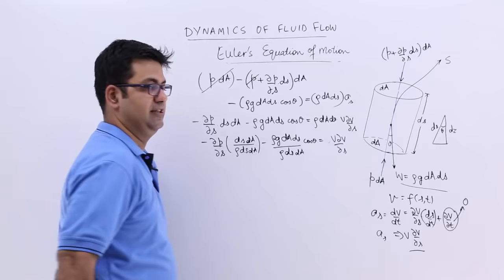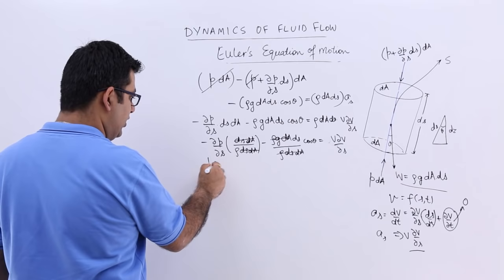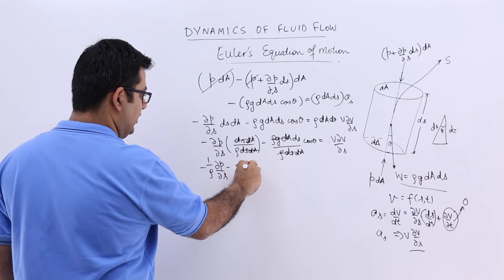This and this can get cancelled off. This entire thing will go off. So you will have minus, or let us say, 1 by rho negative curly p by curly s minus g cos theta is equal to V curly V by curly s.